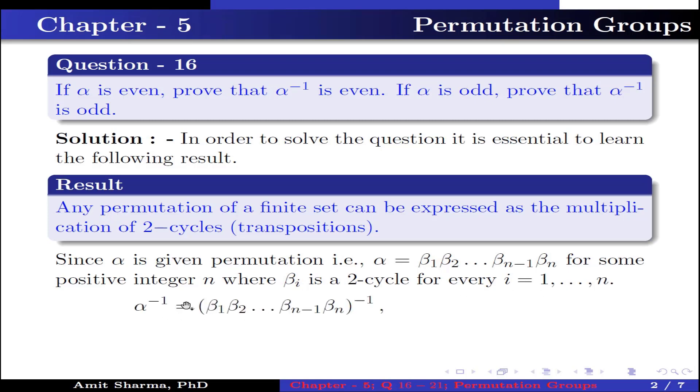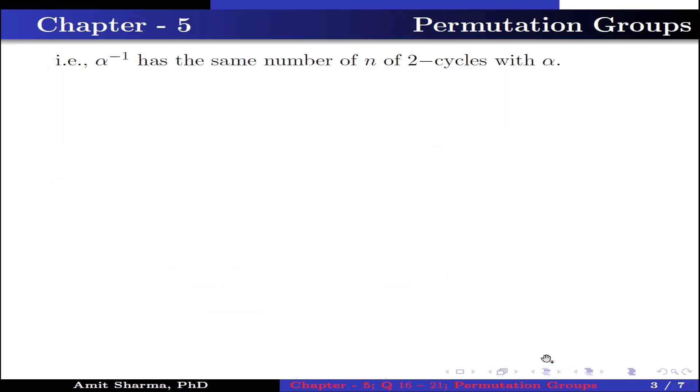Now α⁻¹ can be written as the inverse of permutation β₁β₂...βₙ, which is further written as βₙ⁻¹βₙ₋₁⁻¹...β₁⁻¹, which is further written as βₙβₙ₋₁...β₁. Why? Because each βᵢ⁻¹ equals βᵢ for i = 1 to n, because βᵢ is a 2-cycle.